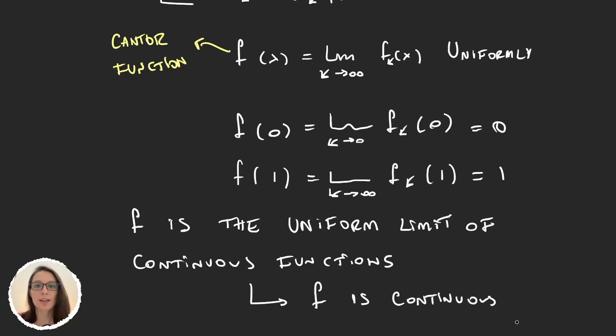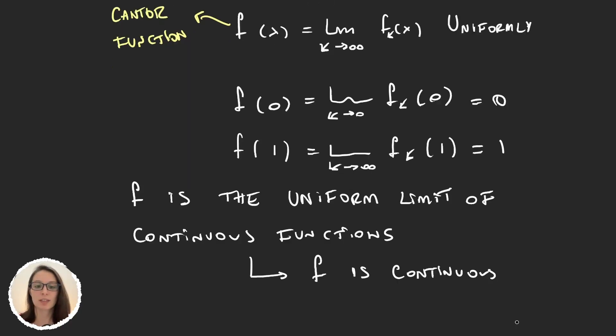But also, f is constant almost everywhere, because it is constant in those sets that we've removed from the Cantor set. The Cantor set has measure 0, so the sets we were removing have measure 1. So f is constant in those sets, then it's constant almost everywhere. But it's also increasing and continuous. You can see how pathologic this function is. It's amazing, and it's going to be very good for counterexamples because of this very odd behavior that it has.